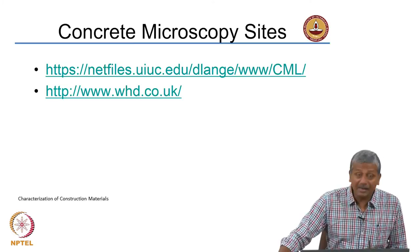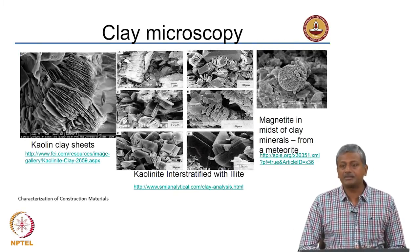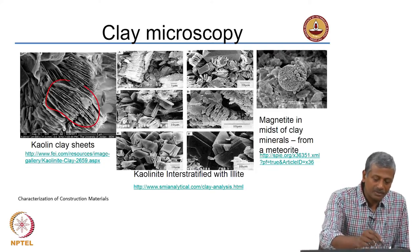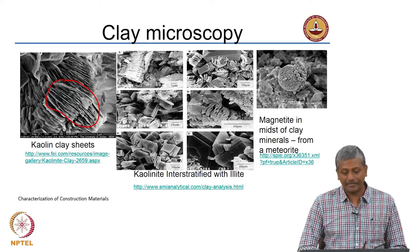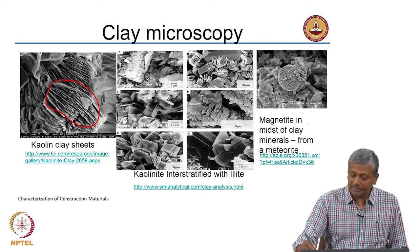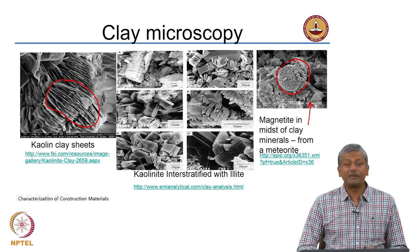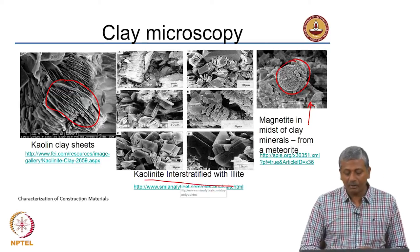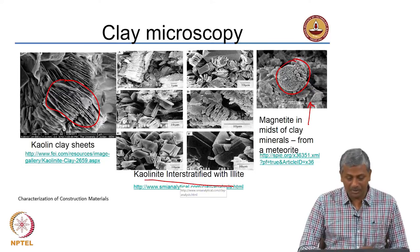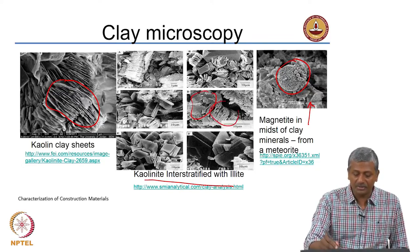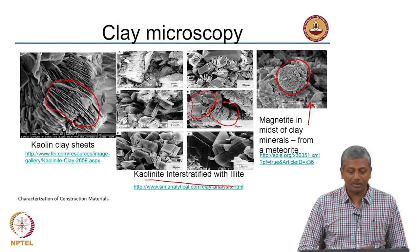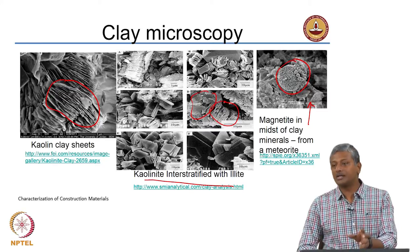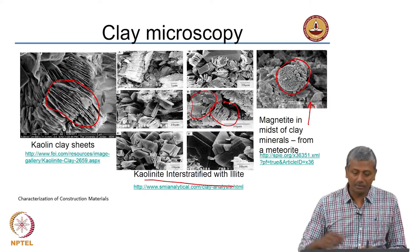I also wanted to show examples of microscopy from other systems like clay. Clay is a very exciting structure to look at under the microscope because it has these plate-like features and you can very clearly see how well you can see these sheets in a secondary electron image. An interesting example is the presence of magnetite in the midst of clay minerals from a meteorite sample — a sample that came from space to earth. There is also an example of kaolinite clay interstratified with illitic clay, showing differences in morphological features visible in the SEM image.